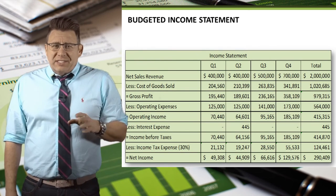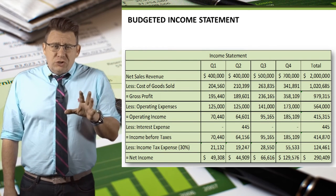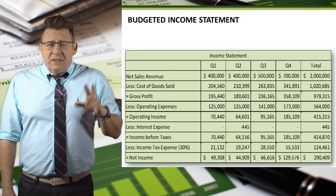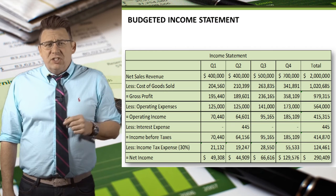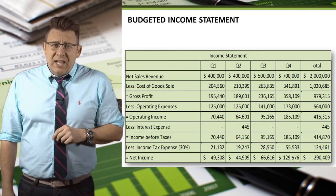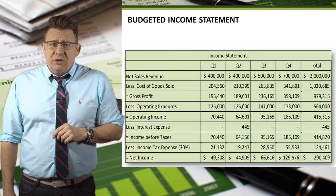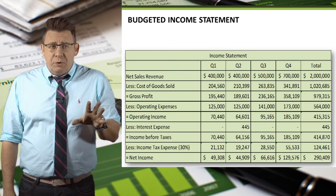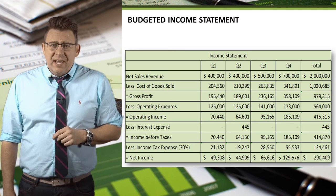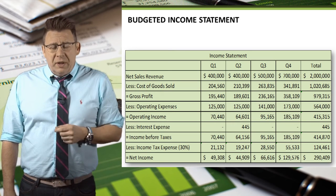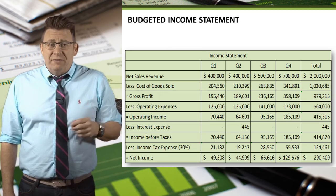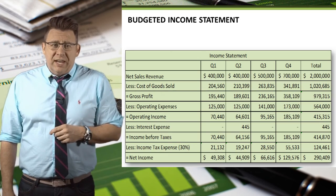Income Tax Expense is usually just a percentage of Income Before Taxes. In this example, I have assumed 30%. So 30% of Income Before Taxes is reported as Income Tax Expense and then deducted from Income Before Taxes to arrive at Budgeted Net Income.